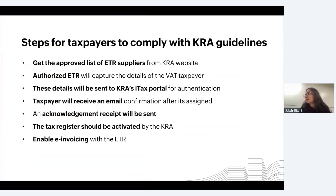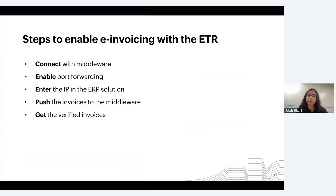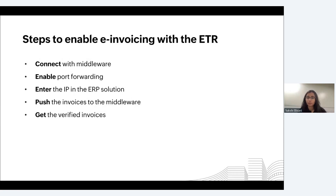Let's simplify e-invoicing into five simple steps: Connect, Enable, Enter, Push, and Get. First, connect with the middleware device — the physical device the ETR will issue you. Once you have it, enable port forwarding on it and obtain a public IP. Enter this public IP into your ERP solution to establish an integration between your solution and the middleware. Once set up, you can directly push your invoices to the middleware. It will perform a series of validations and, once passed, send you a verified e-invoice along with a QR code.